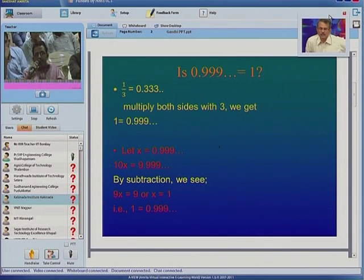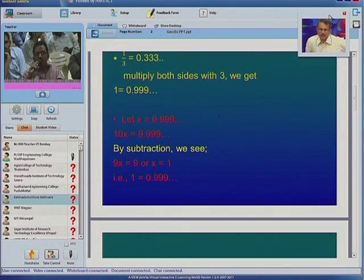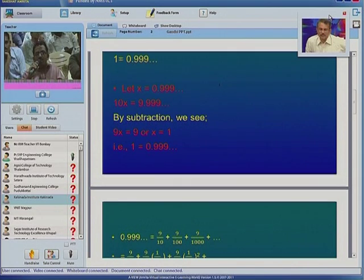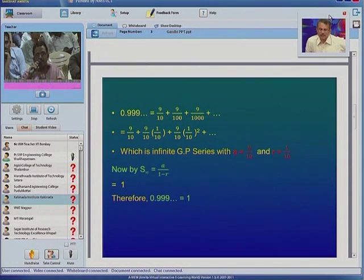And another way is, if we take x is equal to 0.99 and so on, by multiplying it with 10 on both sides, we will see 10x equal to 9.99 and so on. Again, now I will subtract these two equations, one from other, either 1 minus 2 or 2 minus 1. We see that 9x is equal to 9 and x is equal to 1. So this is another kind of convention that 0.999 is really equal to 1.